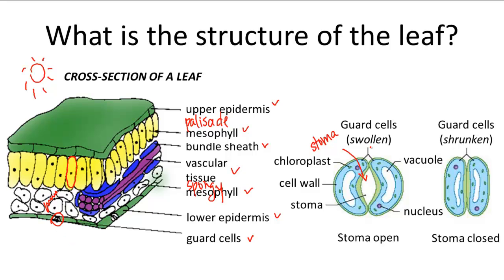As you can see in the diagram, the stoma open when the guard cells swell up by pumping their vacuoles full of water, and then they close when the water is released from the vacuoles. They regulate the passage of gas exchange and water transpiration, and as we mentioned in the photosynthesis video, the stoma generally open during the day to let in CO2 and close at night to prevent water loss.